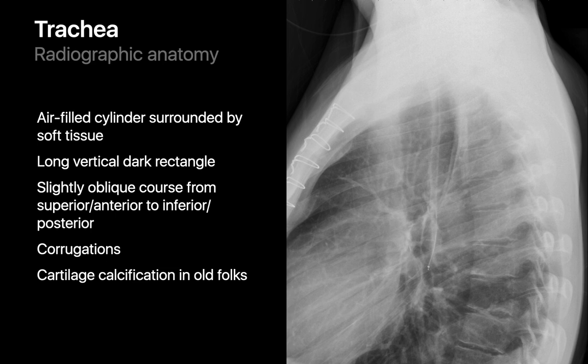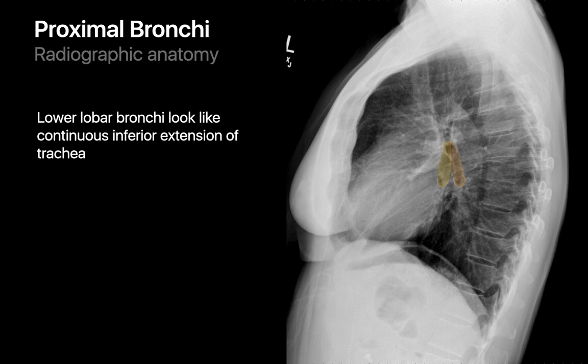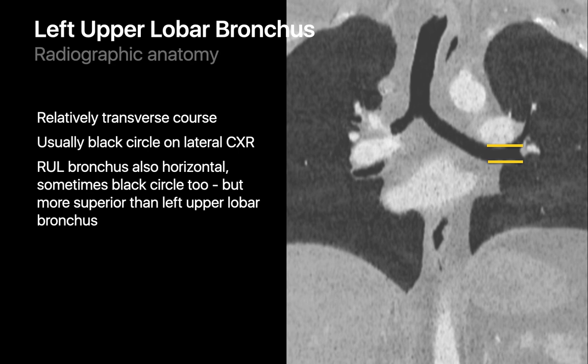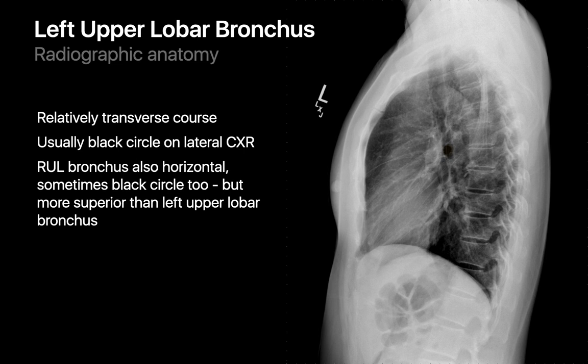An esophageal temperature probe nicely illustrates how the esophagus courses immediately posterior and parallel to the trachea. The lower lobar bronchi are often visible on the lateral chest radiograph as a pair of smaller-width dark rectangles extending inferiorly from the tracheal air column. Since the left upper lobe bronchus has a transverse course, we're usually looking right down its barrel, so its air column appears as a nice black circle on a lateral image.